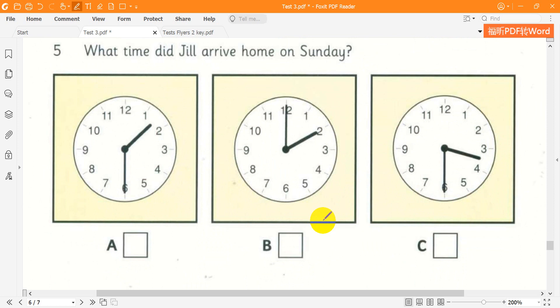Question 5. What time did Jill arrive home on Sunday? Did you come home on Sunday afternoon? Yes, I left early, at about half past one. How long did it take to get home? Oh, about two hours, so I got home at half past three.